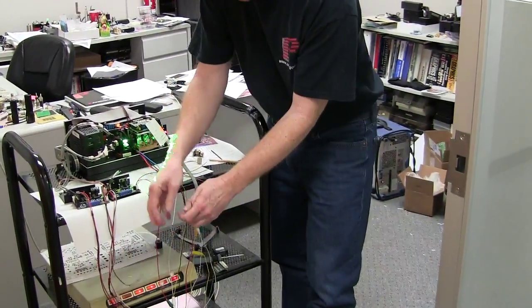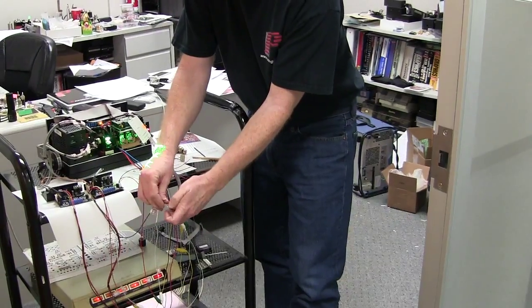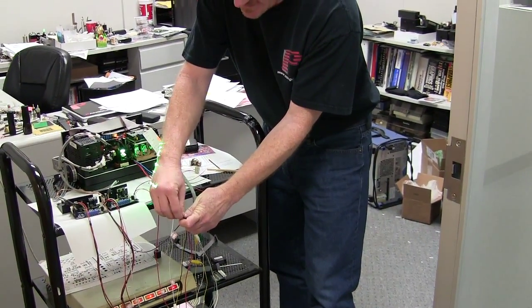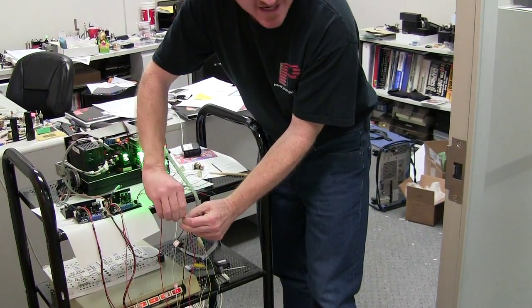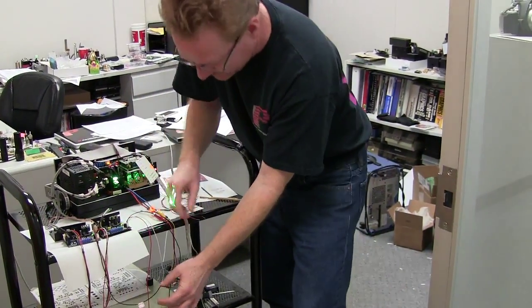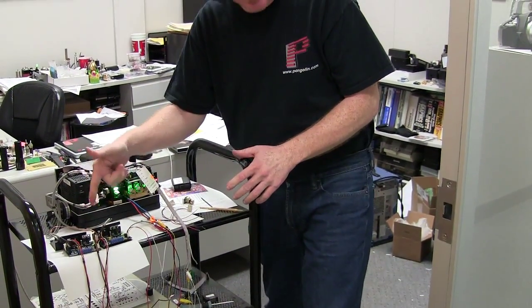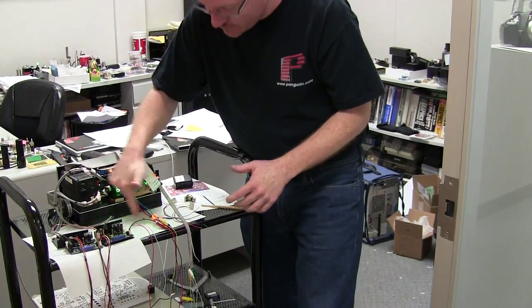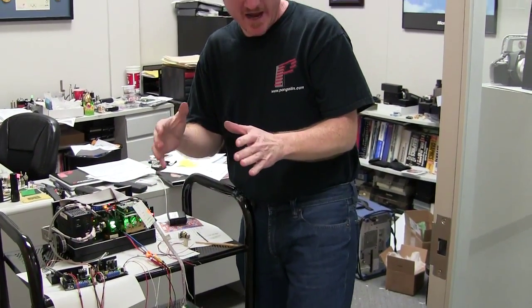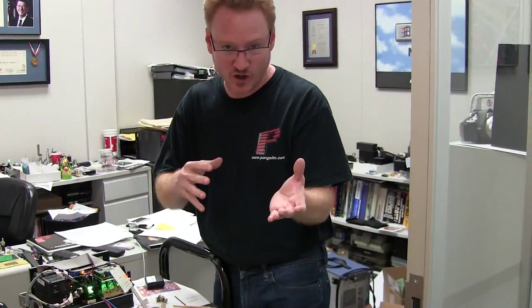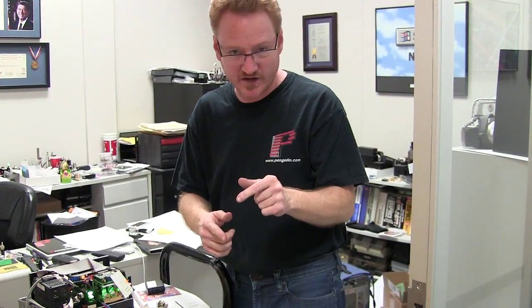But when you connect these two ground connections together like this, what will happen is that now when the X axis draws current it actually communicates that current pulse through the Y axis. And so you have a situation where the X will be communicating or cross talking to the Y, and Y will be cross talking to the X during times of hard acceleration on Y.